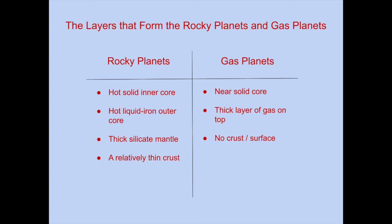Gas planets have a near solid core made of molten heavy metals, and a thick layer of gas. Gas planets do not have a crust, as the planet is mostly made of gas, so there is no such thing as the surface of the planet.